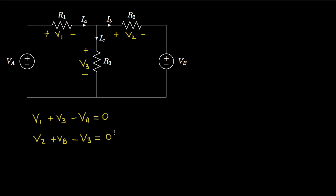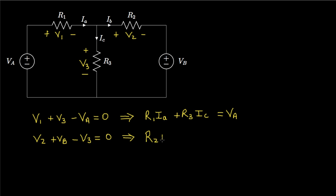Since we know the resistances and source voltages, we rewrite these equations in terms of the unknown currents Ia, Ib, and Ic. V1 equals R1 times Ia, since Ia moves in the direction of the drop. V3 equals R3 times Ic. Taking VA to the other side gives the first equation. For the second equation, V2 equals R2 times Ib.